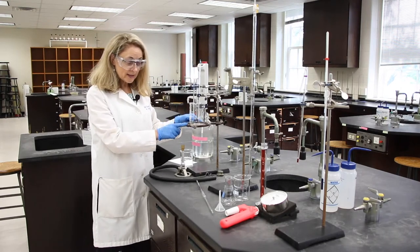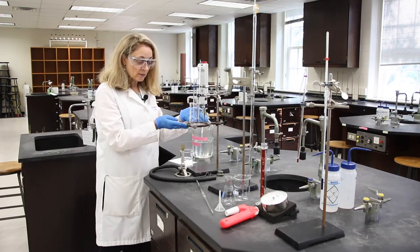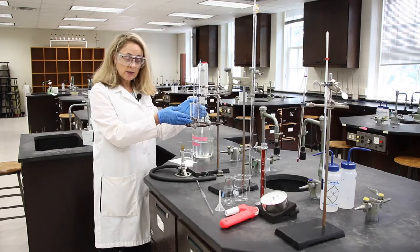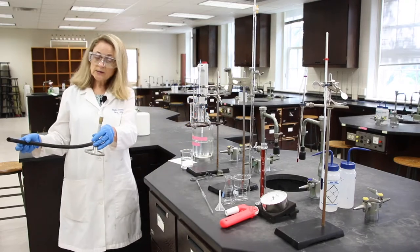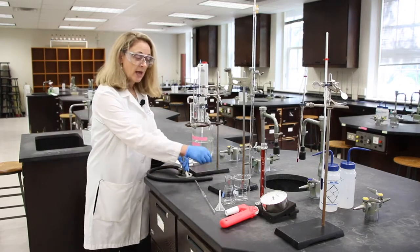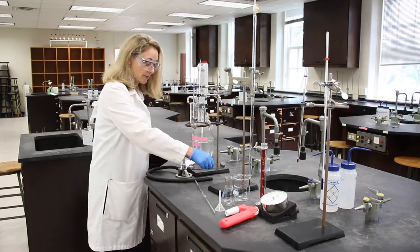We have a ring stand with a ring and gauze that we can set a beaker on, a Bunsen burner, and a striker to light our Bunsen burner.